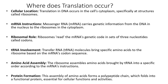So where does translation occur? Translation of the DNA occurs in the cell cytoplasm at ribosomes, which are the site of protein synthesis as covered in previous videos. The messenger RNA carries genetic information from the DNA in the nucleus to the ribosomes in the cytoplasm. The ribosomes then read the mRNA's genetic code in sets of three nucleotides called codons.